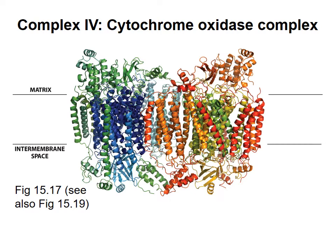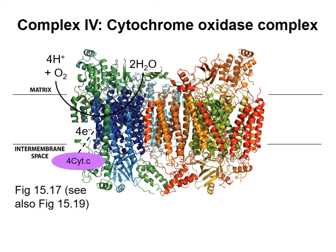Like the other complexes of the chain, complex IV contains electron-accepting cofactors — specifically a site with two copper ions, a heme, and an unusual site where oxygen is bound that contains both a heme and a copper ion.